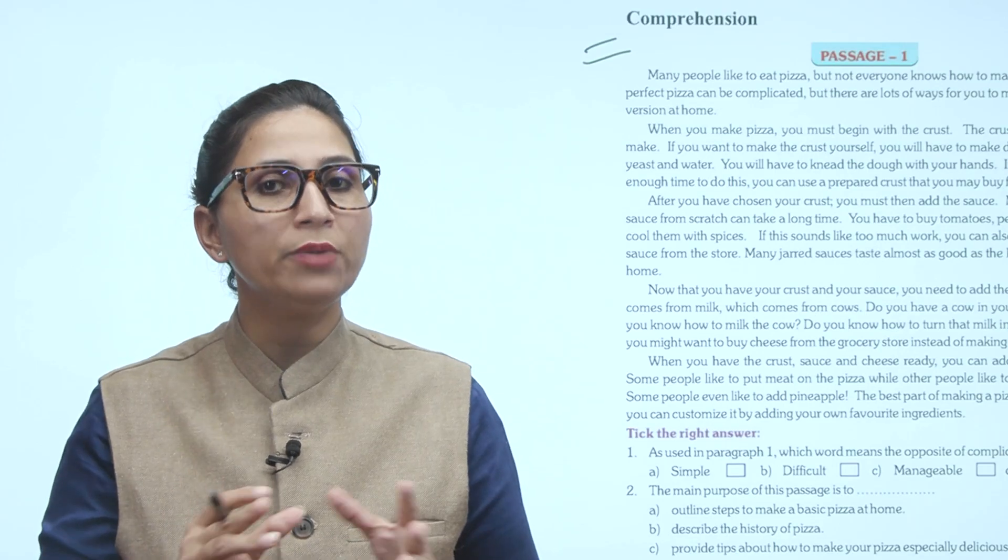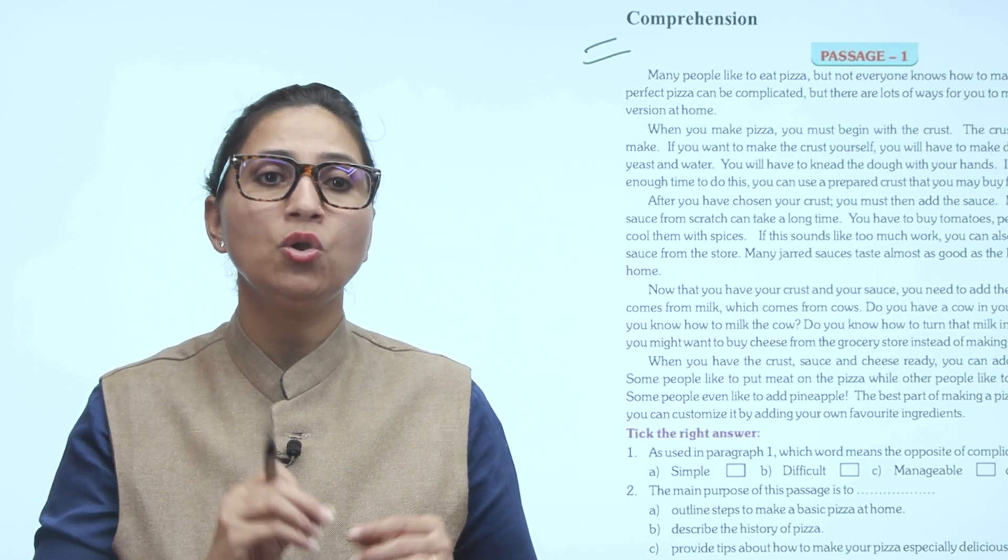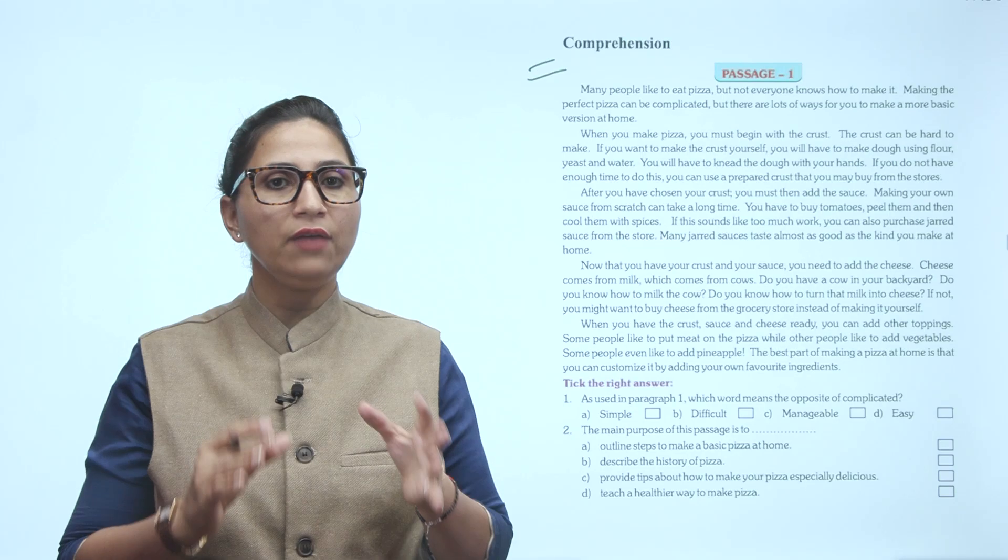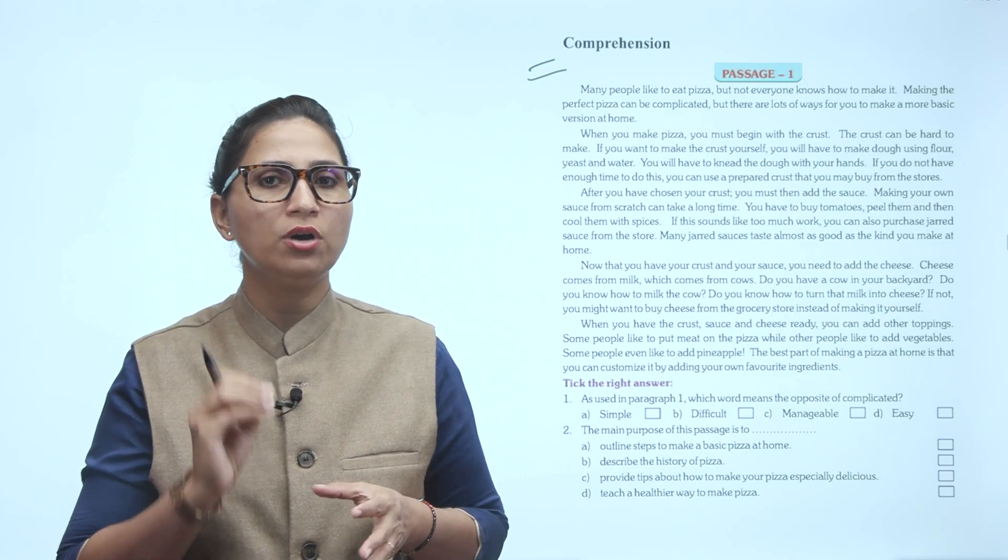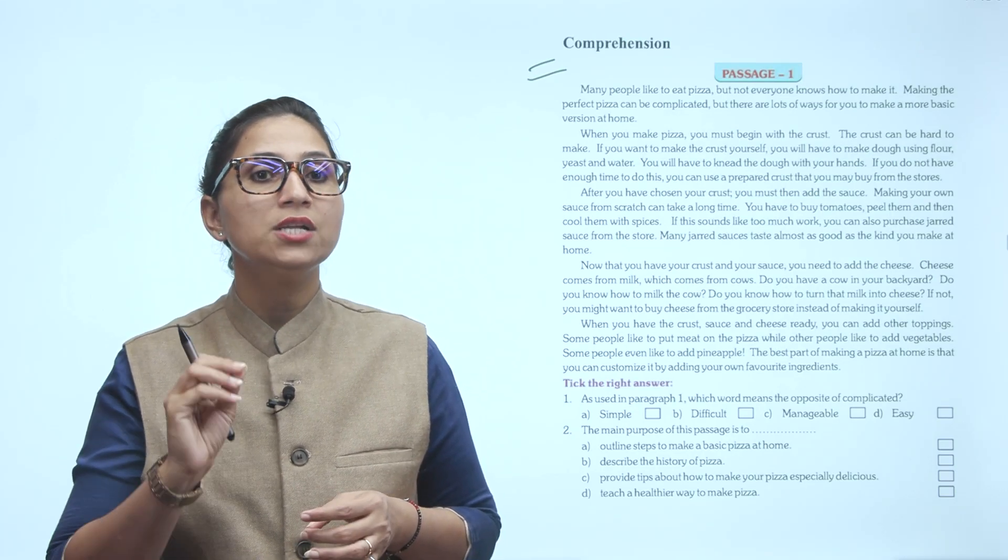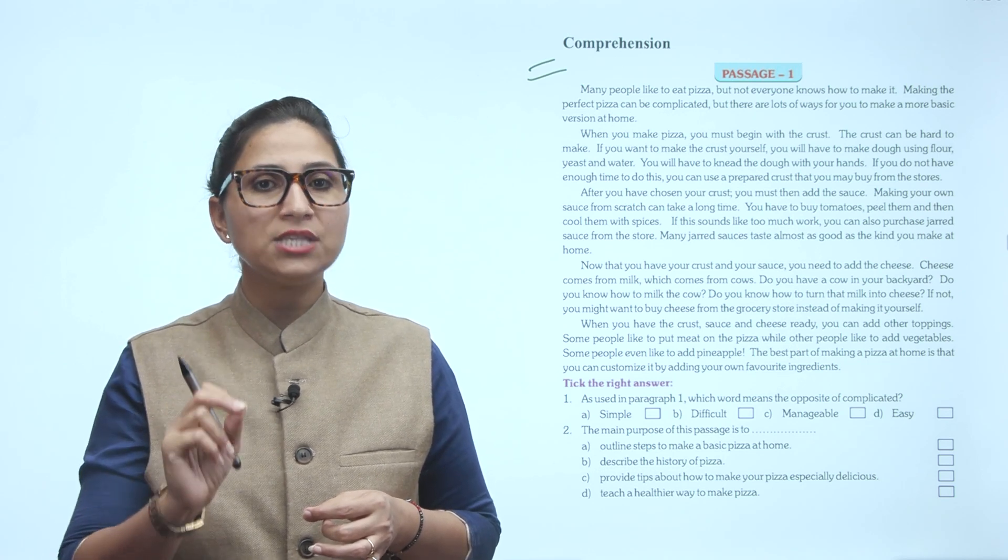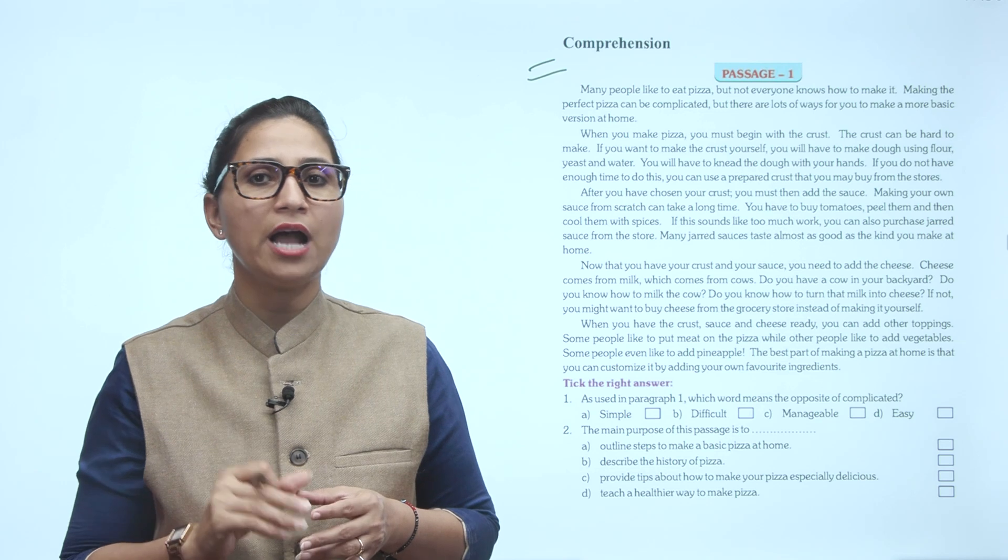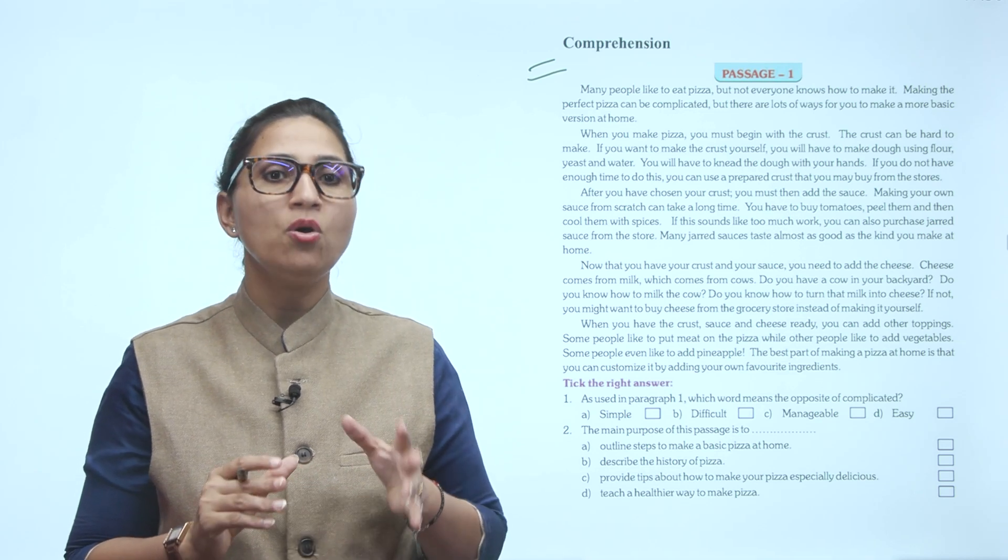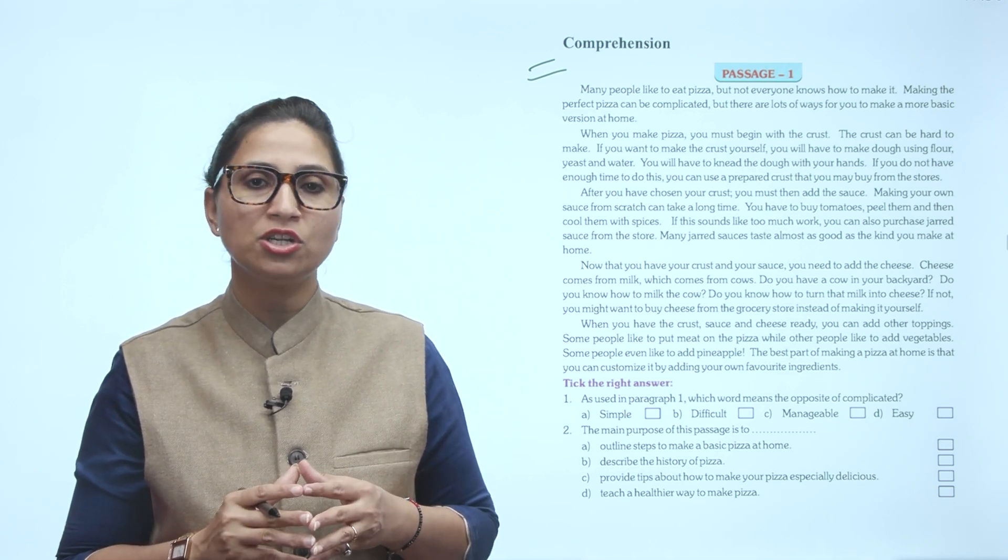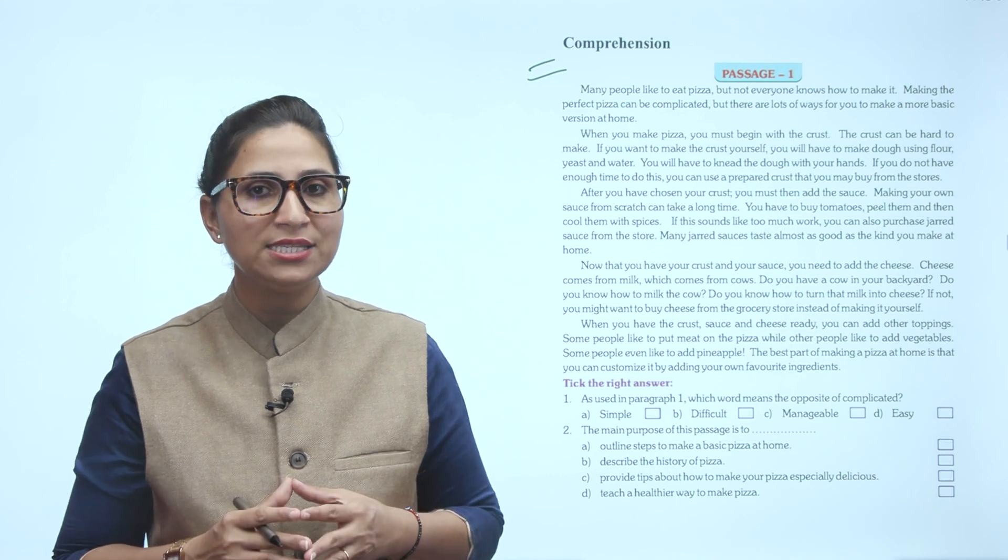After you have chosen your crust, you must then add the sauce. Making your own sauce from scratch can take a long time. You have to buy tomatoes, peel them, and then cook them with spices. If this sounds like too much work, you can also purchase jarred sauce from the store.